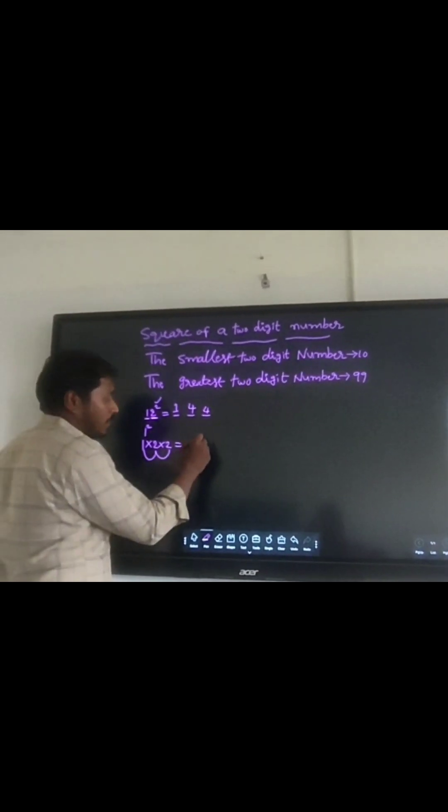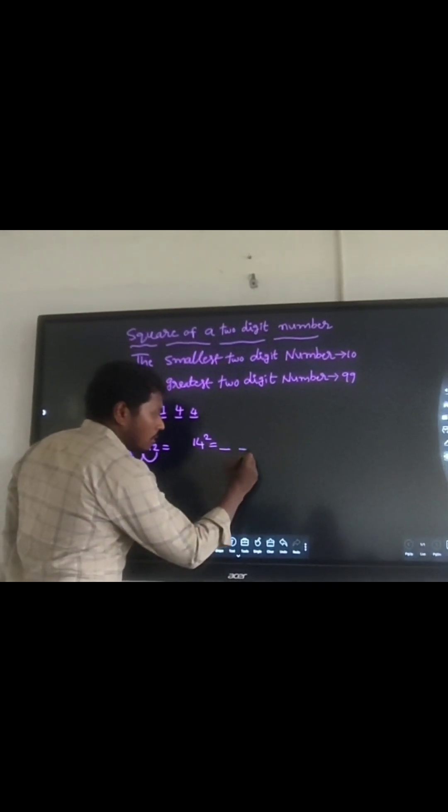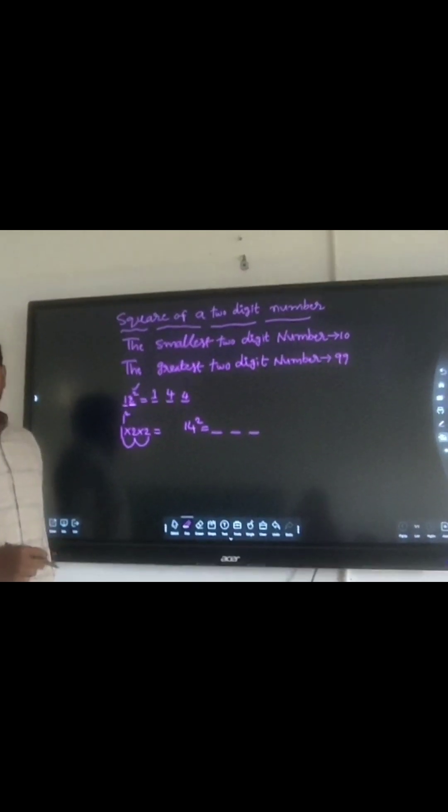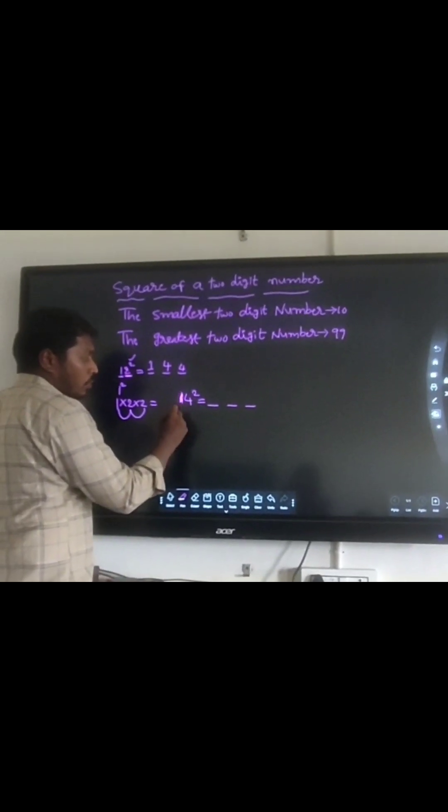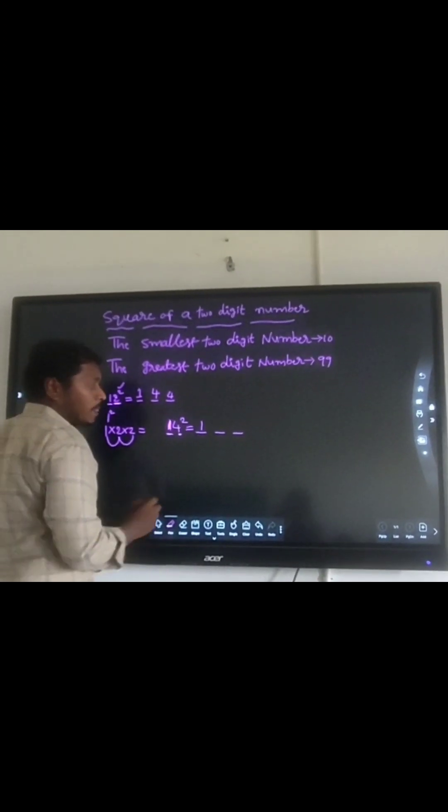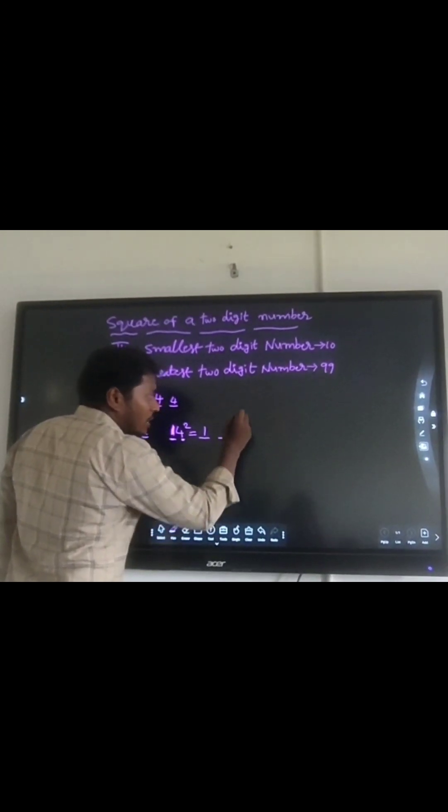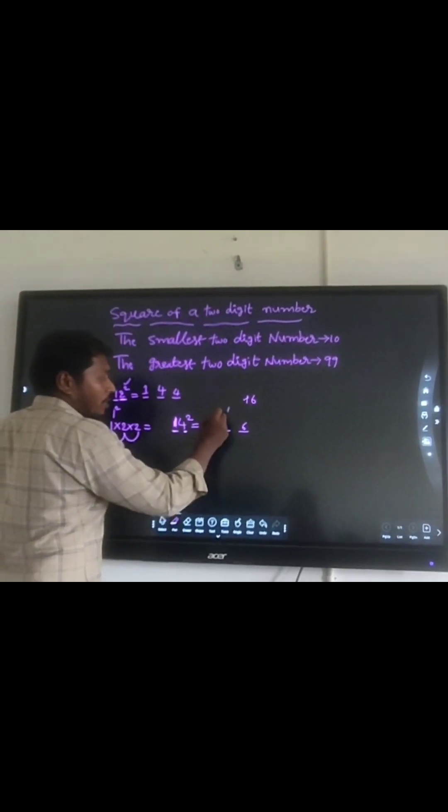14 square. First, divide the answer into 3 parts. Take the left digit, that is 1. Do 1 square, which is 1. Next, 4 square is 16. 16 is a 2-digit number, yes? So 1 is carried forward to the next place.